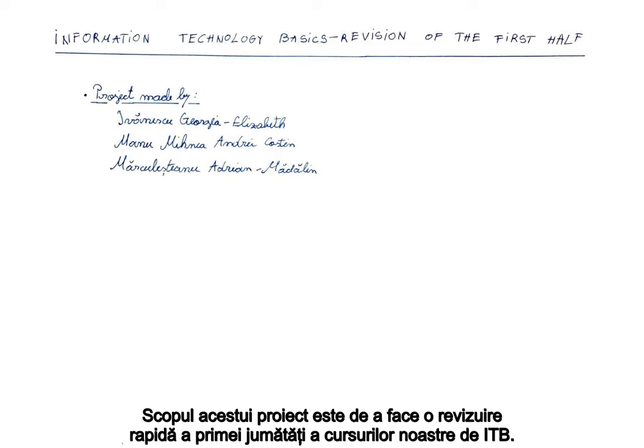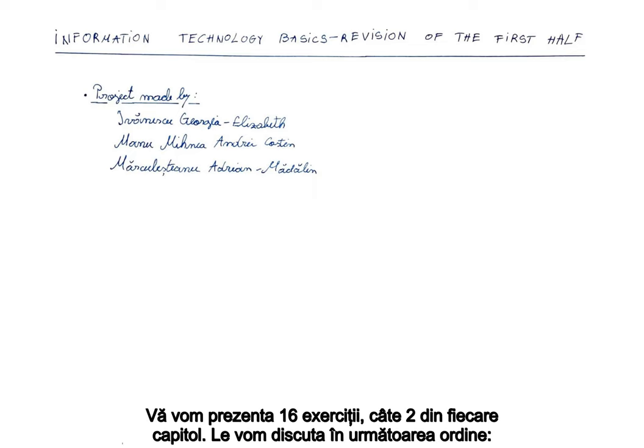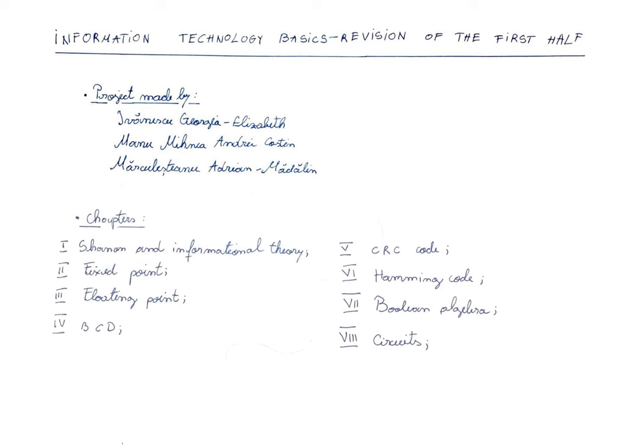The goal of this project is to make a quick revision of the first half of our ITB courses. We're going to present you 16 exercises, two from each chapter. We will discuss them in the following order.